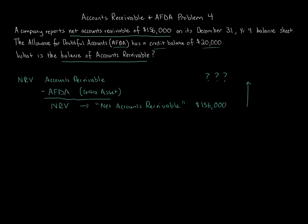Let's bring up DEALOR. This acronym lists six types of accounts. If you draw a line down the middle between the A and the L: drawings, expenses, and assets increase on the debit (left) side, while liabilities, owner's equity, and revenue increase on the right side. Accounts receivable is an asset, and AFDA is a contra asset — meaning it increases on the credit (right) side. So AFDA increases on a credit balance, and we're told it has a credit balance of $20,000, meaning it's a positive $20,000.